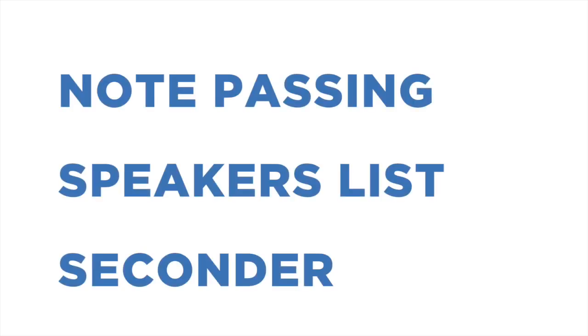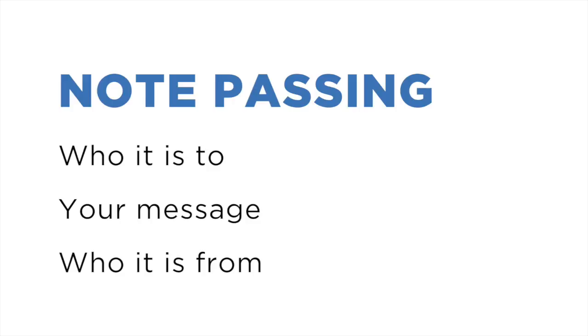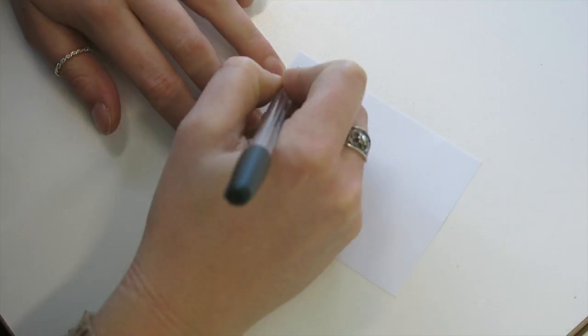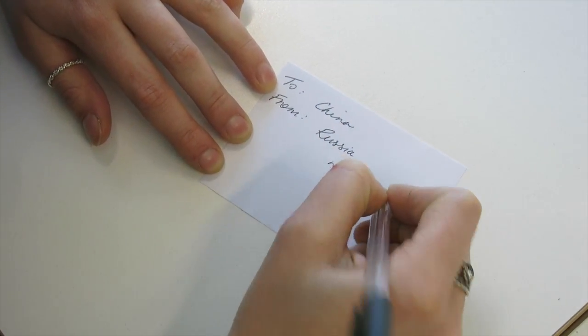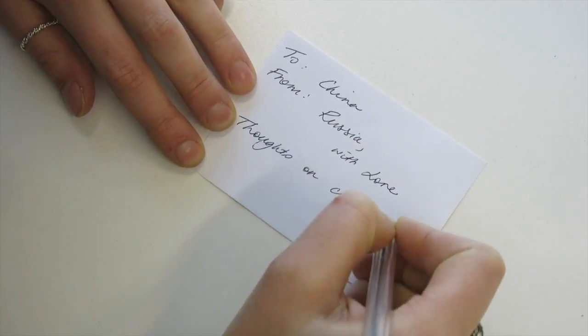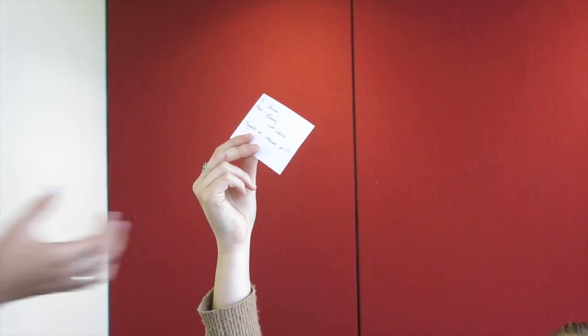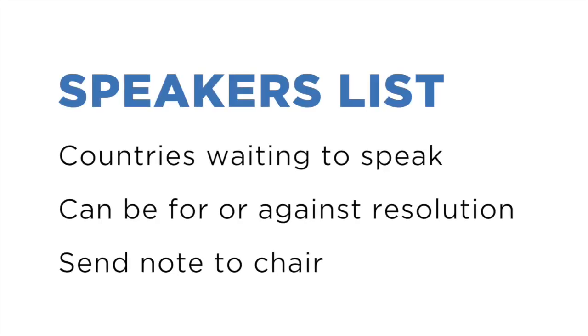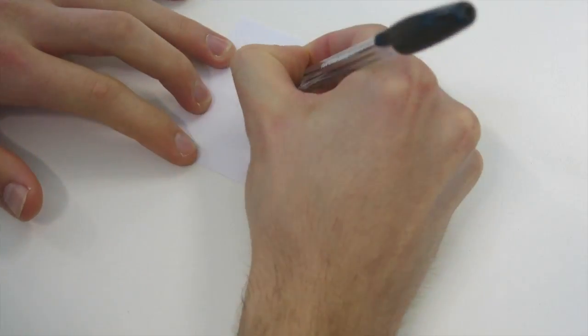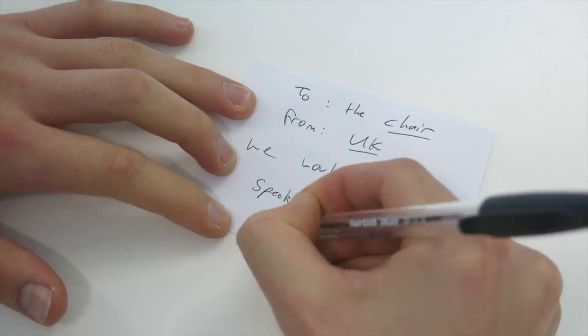I will now note that note passing and the negotiation chamber are open, and I will also call upon the USA as seconder for the resolution. Note passing is, as you may have guessed, the passing of notes. If you wanted to ask China what they thought about clause 2, you'd write on the note who it is to, your message, and who it is from, then stick it in the air and a facilitator will deliver it. The chair also opened the speaker's list — a list of countries who want to speak for or against the resolution. Simply send a note to the chair letting them know which side you'd like to speak on.